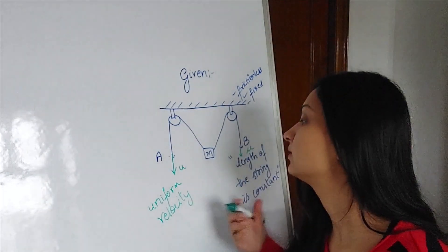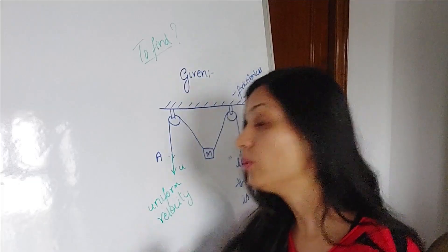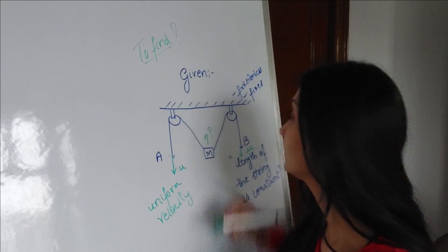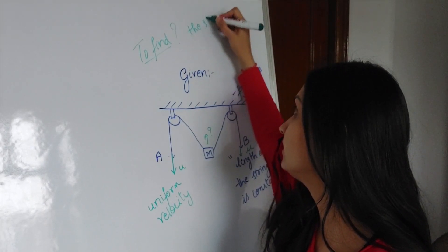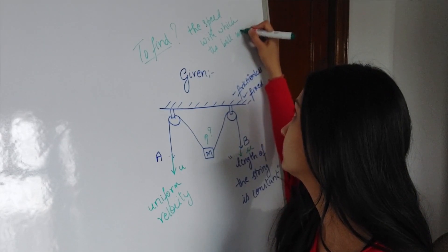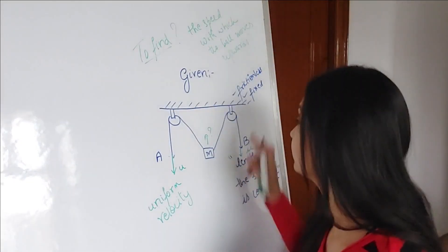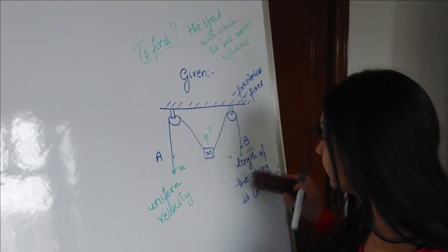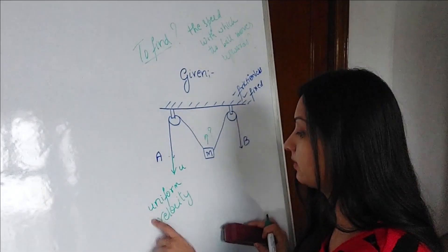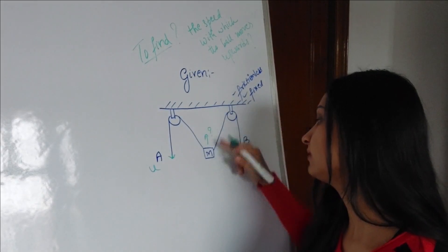The two ends A and B of the thread are pulled downwards with a uniform velocity u. You have to find the speed with which the ball of mass m moves upwards. Let me concentrate on the diagram. The length of the string is constant, and u is known — you have to find the velocity of this ball.